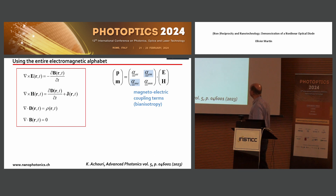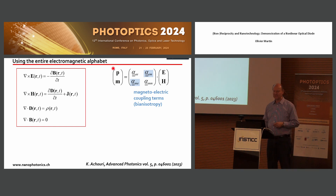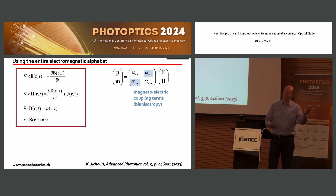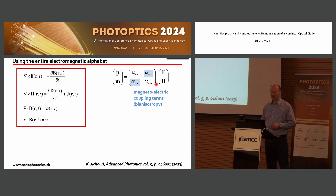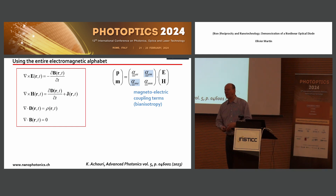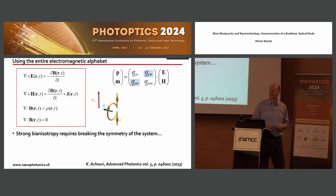Combining them together means going into coupling between electric and magnetic effects. For example, if you look at the dipolar response of the system, an electric dipole will be produced by the electric field through the polarization term. But you would also like the magnetic field to produce some electric response through this off-diagonal term — the magneto-electric coupling — and the same for the magnetic effect. This means if you want to play the game with all possibilities in electromagnetics, you need to have bianisotropic systems with coupling between electric and magnetic terms.